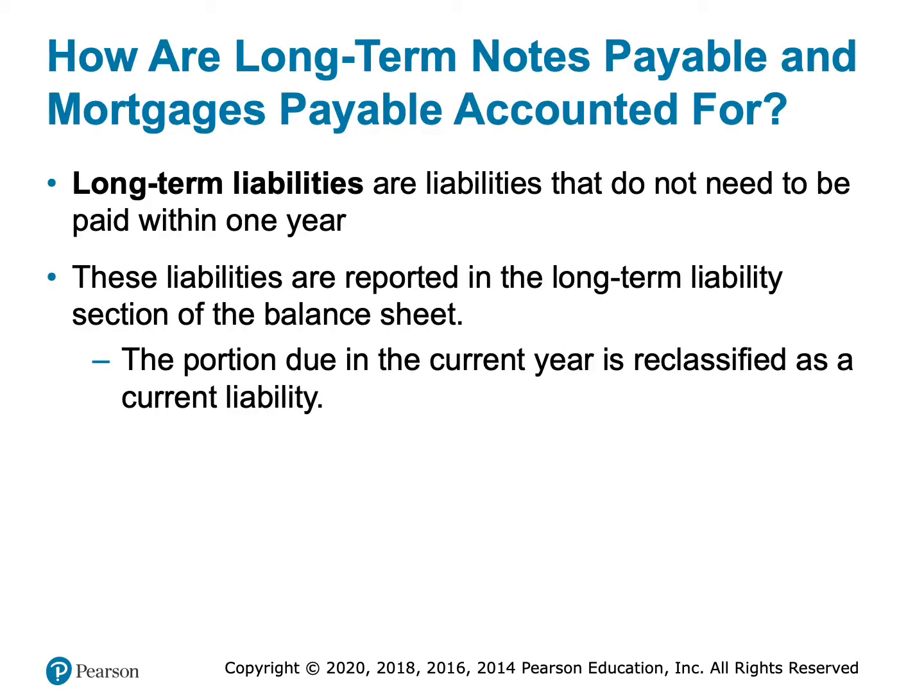A long-term liability is a liability that does not have to be paid for at least one year; those are reported in the long-term liability section of the balance sheet. As discussed at the end of Chapter 11, if portions of a long-term liability are due within the next 12 months — like mortgage payments — that portion is classified as a current liability, and the rest is classified as long-term.